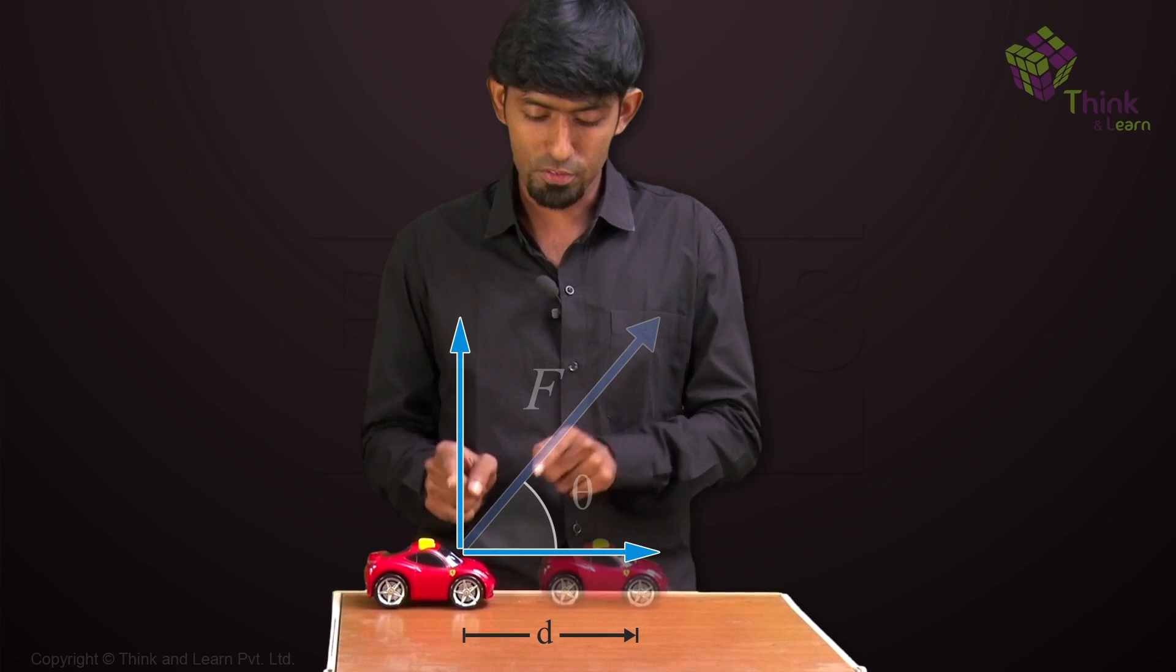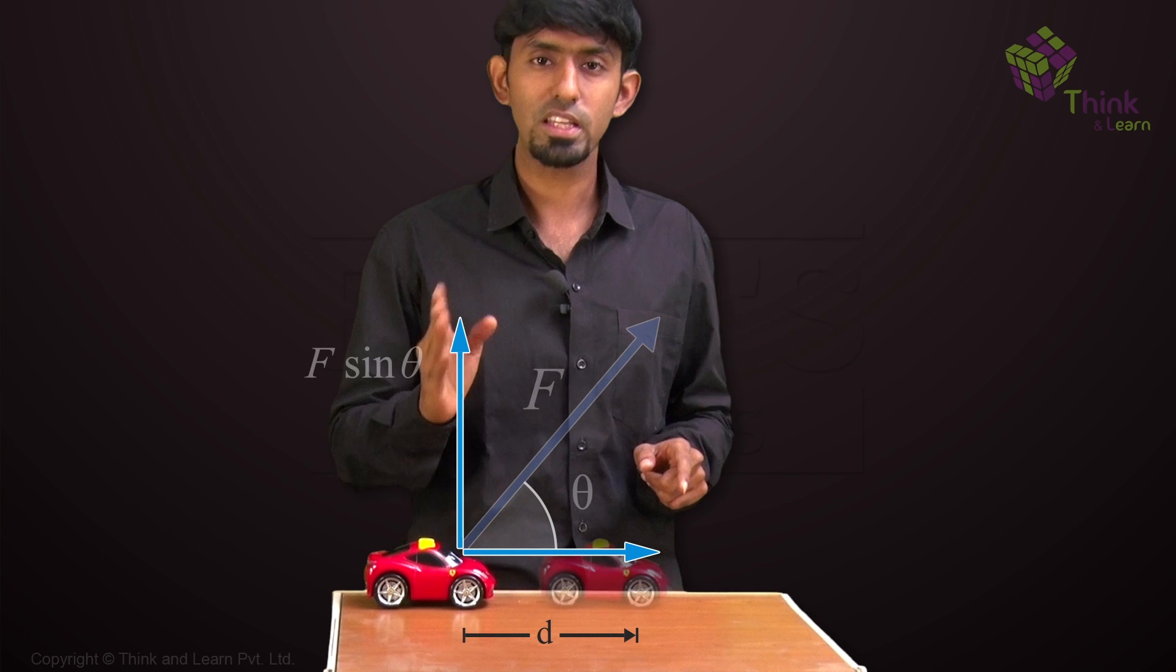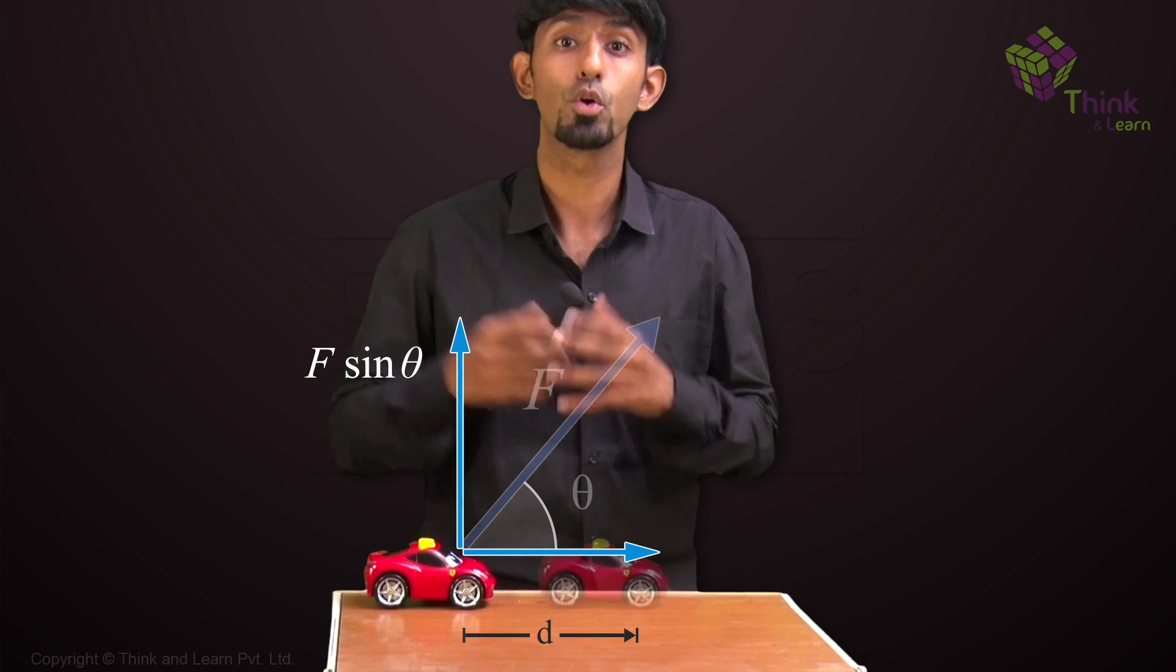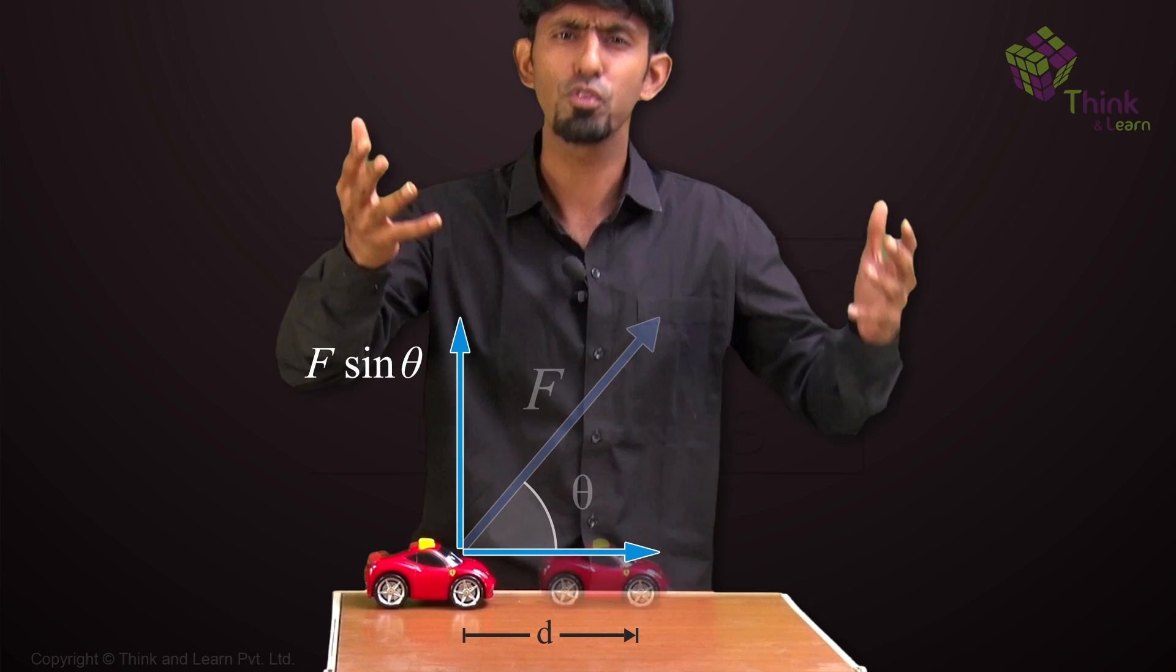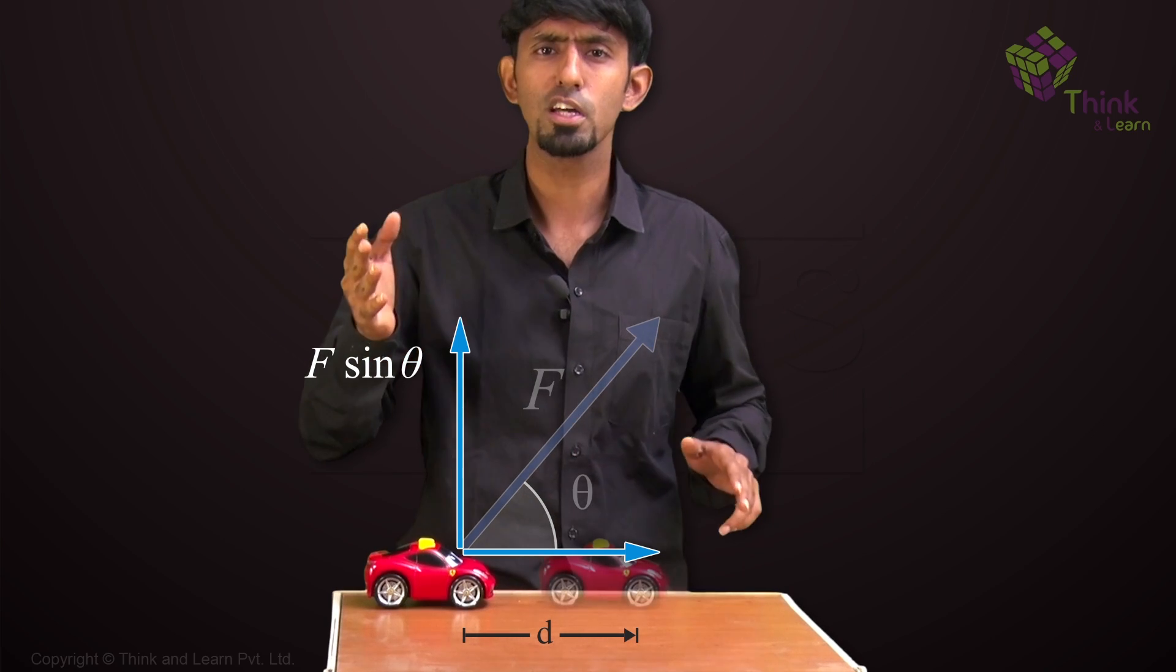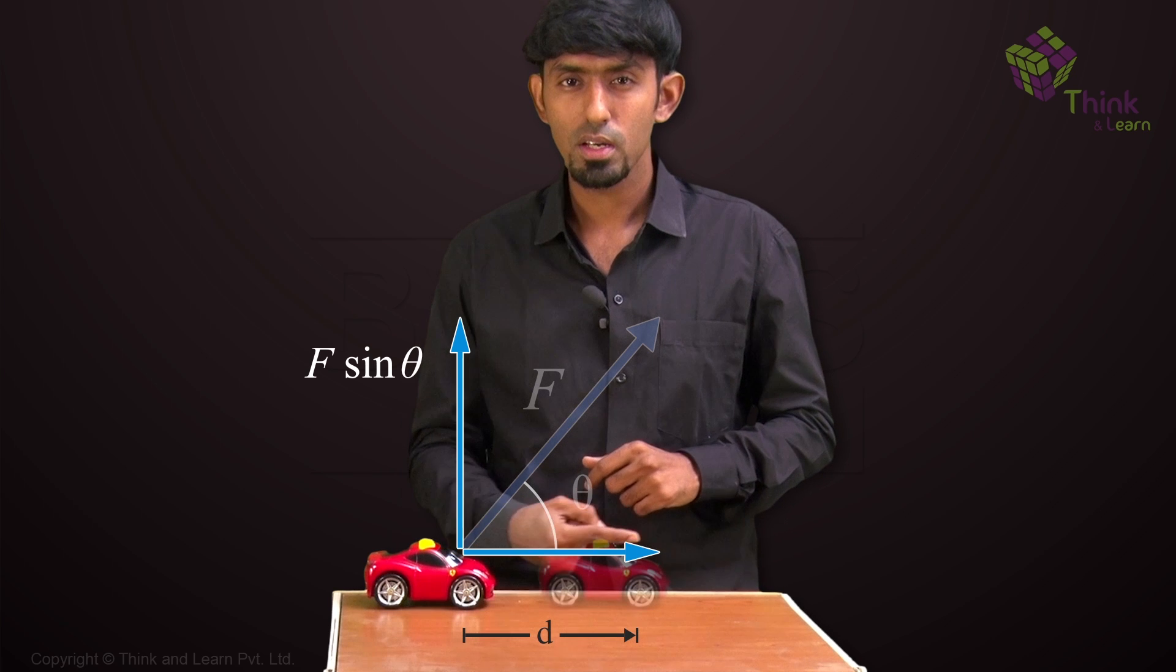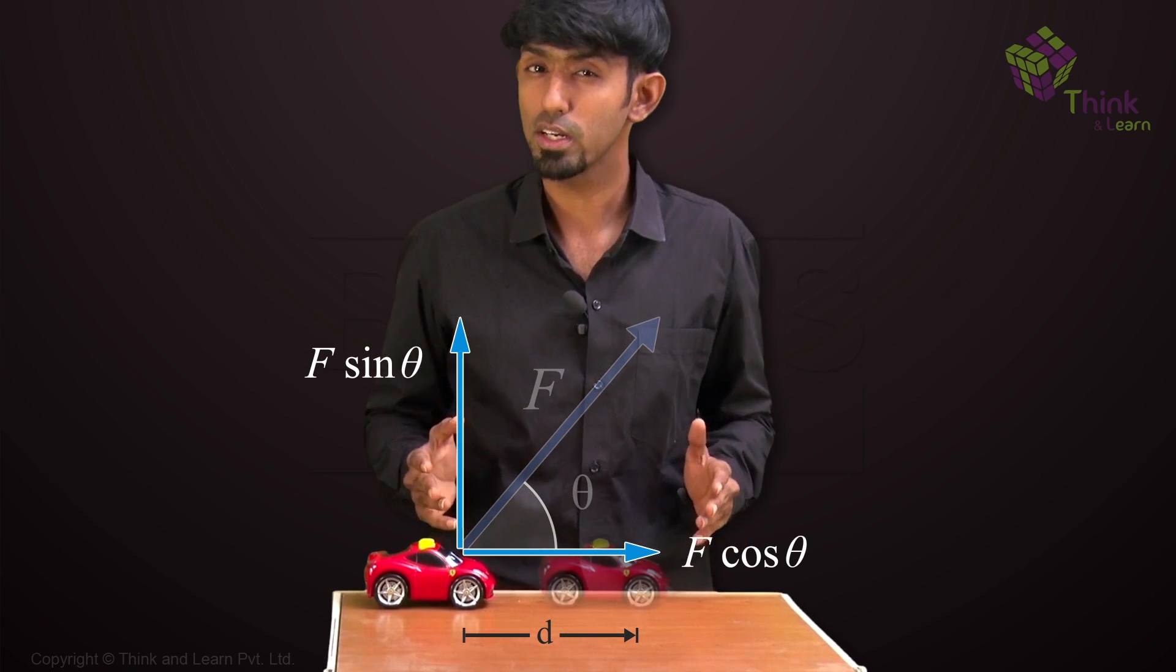So if you had F, and if this angle was theta, then F sin theta would have had nothing to do with moving the body in this direction. It could not have, because you know it is natural that perpendicular components are independent of each other. Then what is this force? It is F cos theta, and that is the only one that matters.